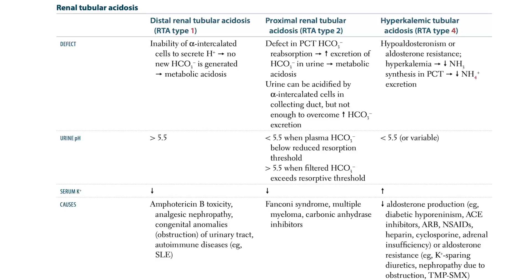Let's talk about renal tubular acidosis. Renal tubular acidosis — these are disorders of the renal tubules that cause normal anion gap metabolic acidosis.